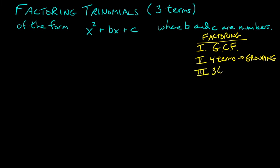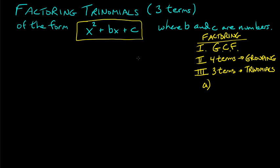What happens if you only have three terms? That's what we're going to do in this video. When you have three terms, these are sometimes called trinomials. There are a lot of different techniques, but in this video we're just going to focus on one specialized technique. It doesn't always work, but when it works it's probably the easiest way. We're focusing on three terms that look like x squared plus some number times x plus another number — where the coefficient of x squared has to be one: 1x² + bx + c.